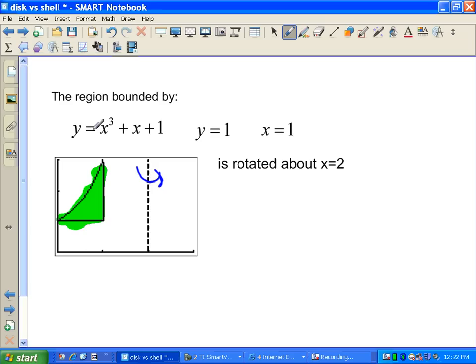Right away, we know I can't easily, or even any way that I'm aware of, turn this into X as a function of Y. So, we're stuck with this. We're stuck with making my representative slice there. So, that slice is parallel. So, we're definitely using a shell method.